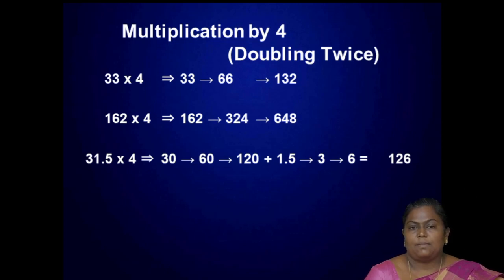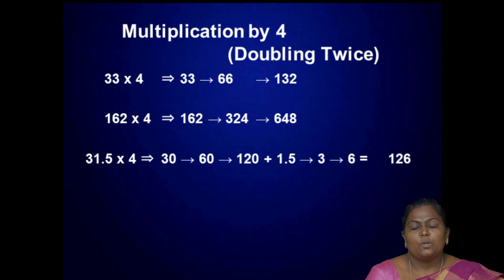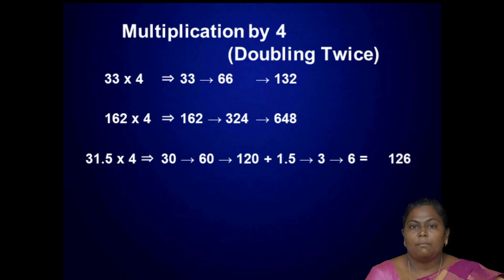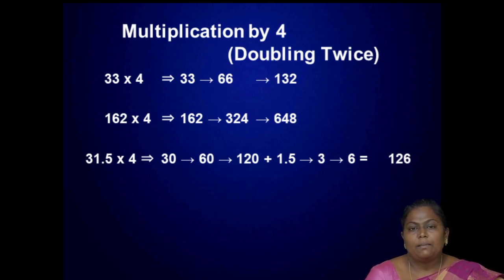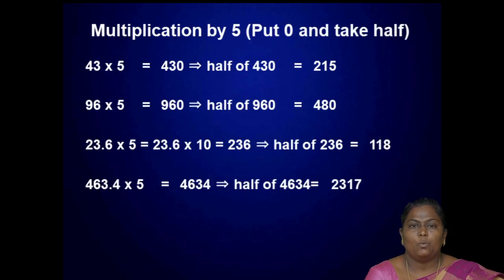For a decimal number, 31.5 into 4. Split 31.5 into 30 plus 1.5. Then 30 doubled is 60, 60 doubled is 120. Then 1.5 doubled is 3, 3 doubled is 6. So total 120 plus 6 is equal to 126.